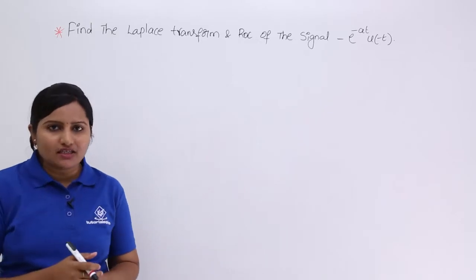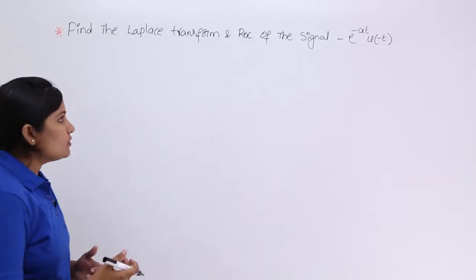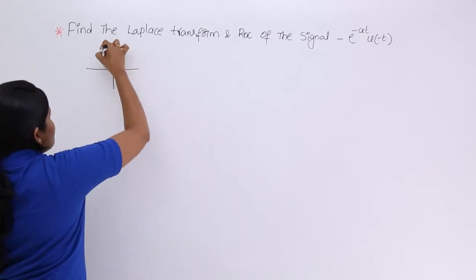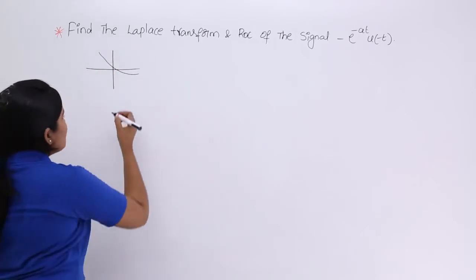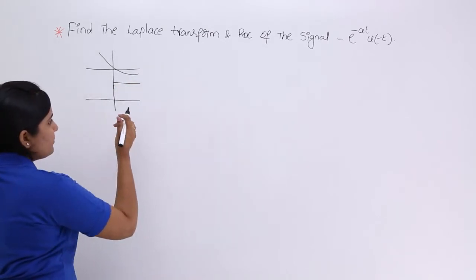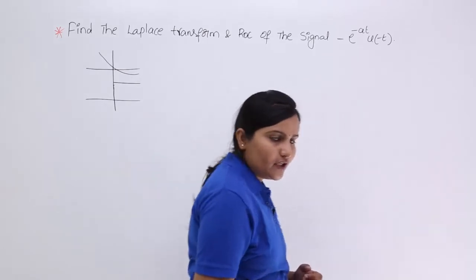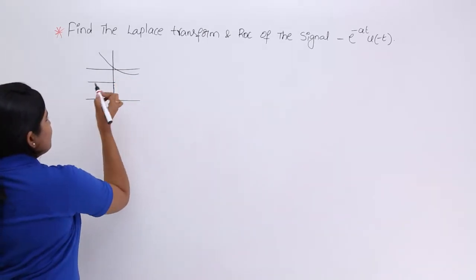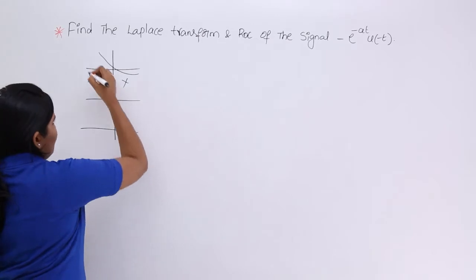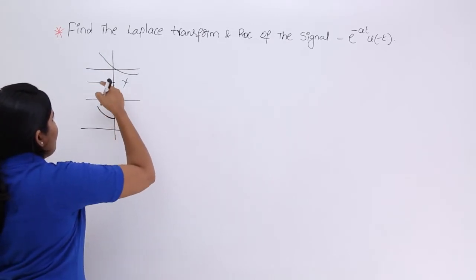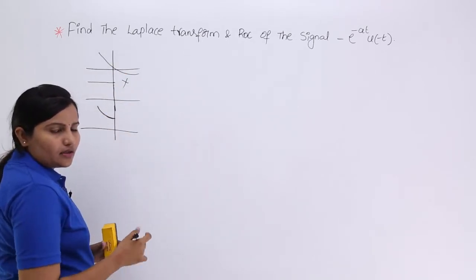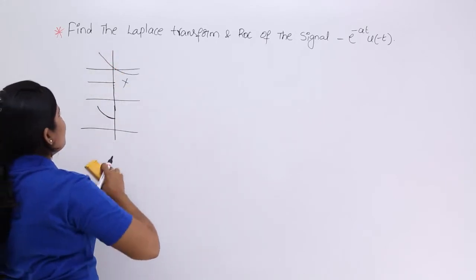First, I want to draw the signal to show how it will look. We are given e power minus at, which is a decaying exponential. They have given u of minus t, not u of t. u of minus t is a left-sided unit step. So if you multiply these two, you get only the left part — the highest decaying part of the exponential — and the remaining part becomes zero.